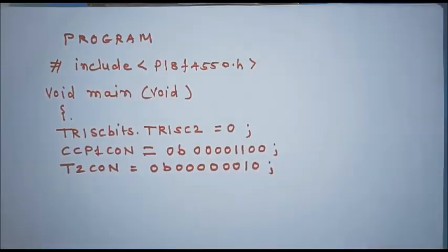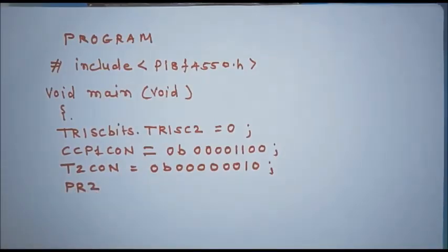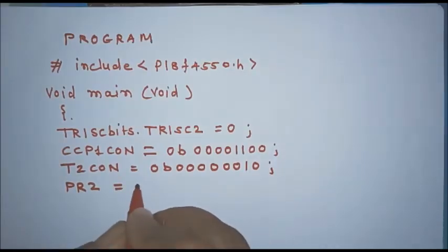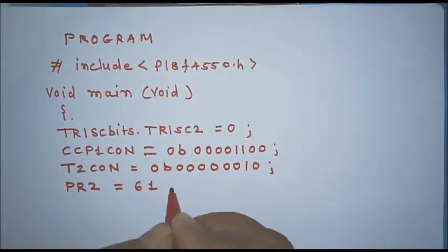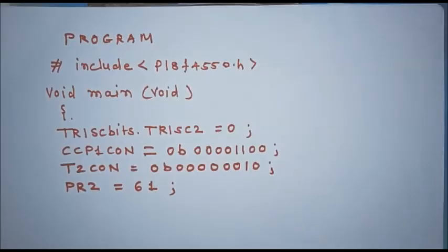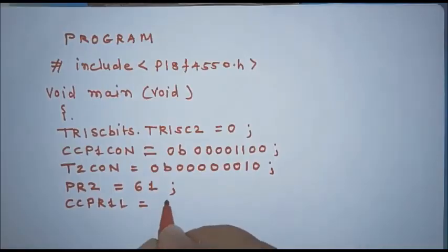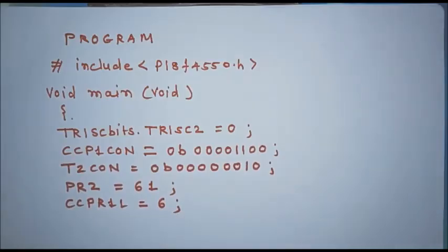Initialize PR2 with 61 in decimal, which is related to the PWM frequency. Then load CCPR1L with the count related to duty cycle — for 10% duty cycle, load the value 6 into CCPR1L. This completes the initialization section of the program.